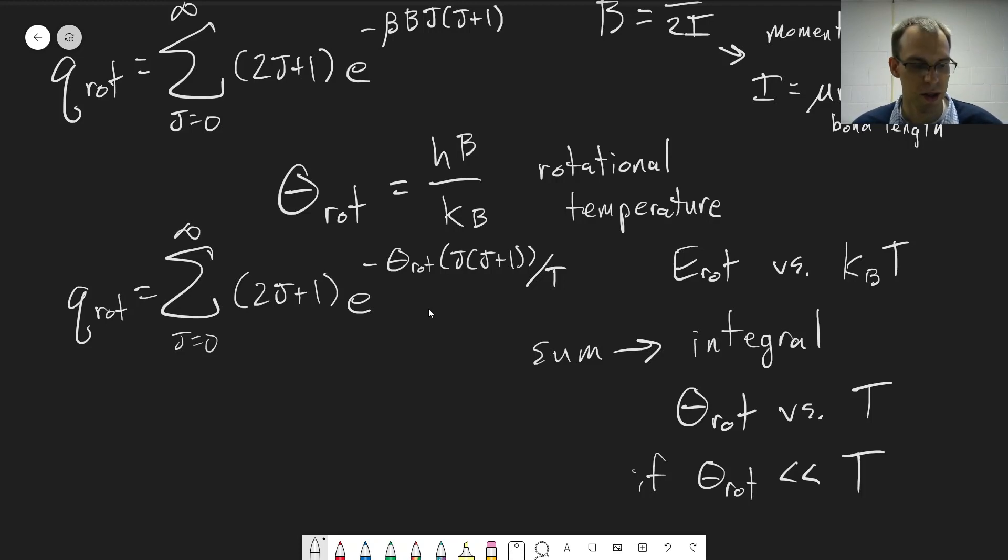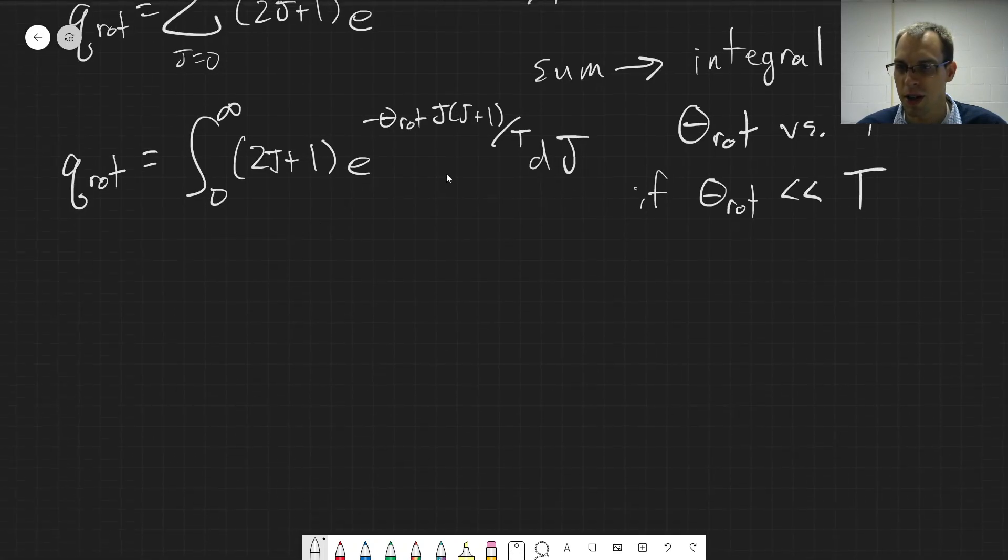Then we can do this approximation from sum to integral. At room temperatures, so for room temperature, this works pretty well. Okay, so under those conditions, we can define this as an integral from 0 to infinity of 2j plus 1 e to the minus theta rot times j times j plus 1 over T dj. Okay, so then we just need to solve this integral.